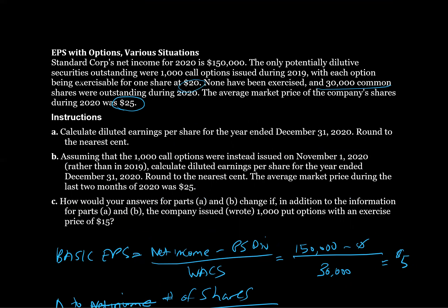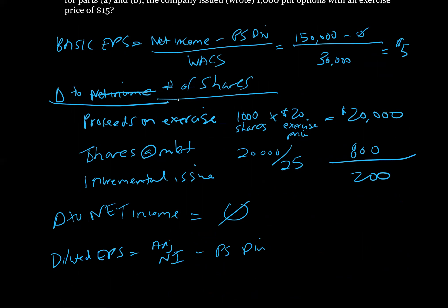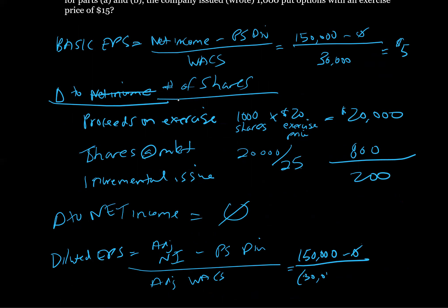Now, the only potential securities outstanding were 1,000 call options. This is not a debenture or bond — there's no interest on this. It is simply an option to buy shares at a certain price. Therefore, there is no change to net income; the change to net income equals zero. For diluted EPS, we use adjusted net income minus preferred share dividends divided by adjusted weighted average common shares. There's no adjustment to net income, so we still have $150,000, with no preferred share dividends. We had 30,000 shares in basic, and now we add 200 incremental shares.